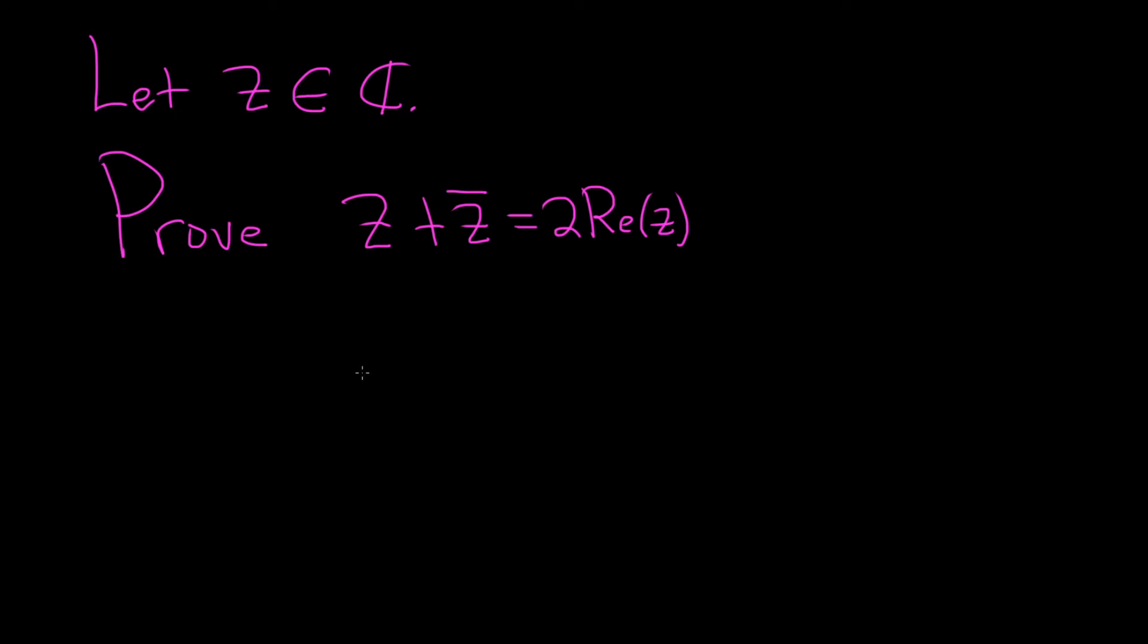In this problem, we have a complex number, and we have to prove that if we take that complex number z and add it to its conjugate, we get two times the real part of z.